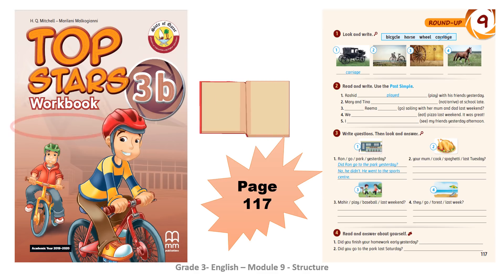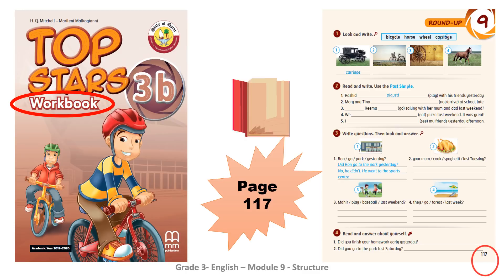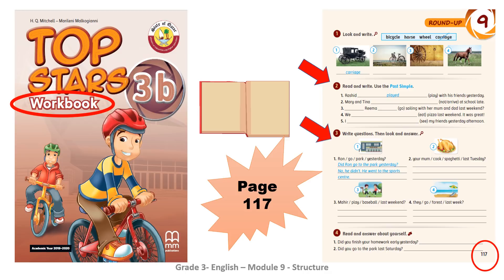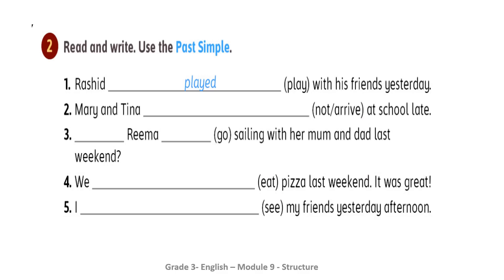Now open your workbook, page 117, and let's work on activities two and three together. Read and write using the past simple. The first one is done for us: 'Rashid played with his friends yesterday.' The key word in the sentence is 'yesterday,' that's why the answer is 'played.' Now pause the video and try to do the rest by yourself.